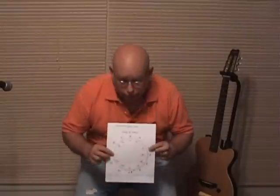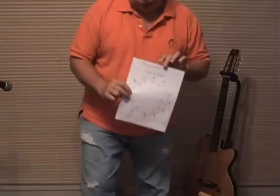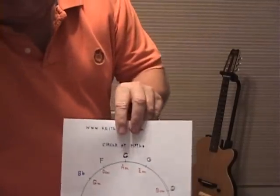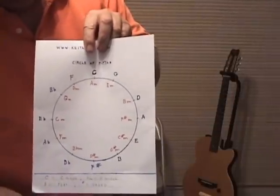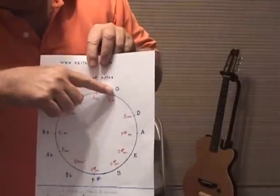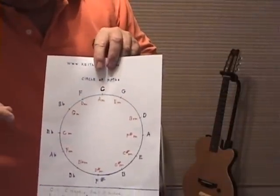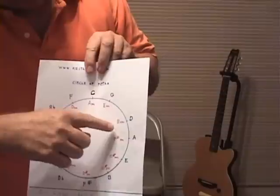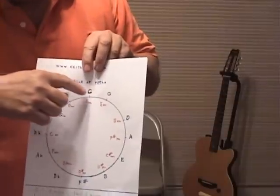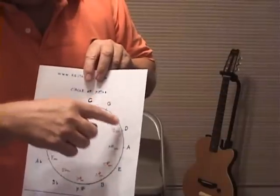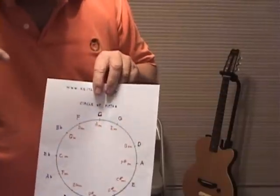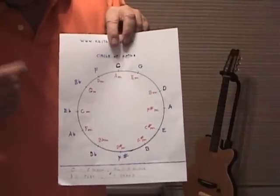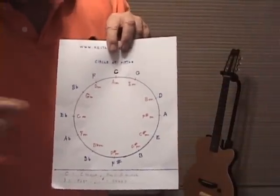This is a circle of fifths. At the top you have C, G, D. When you have letters like C, G, and D, that's considered to be major — C major, G major, D major.